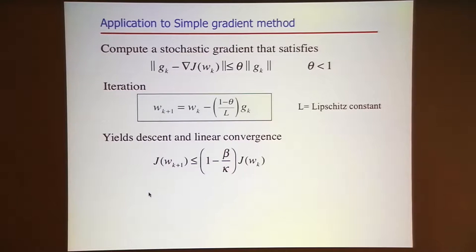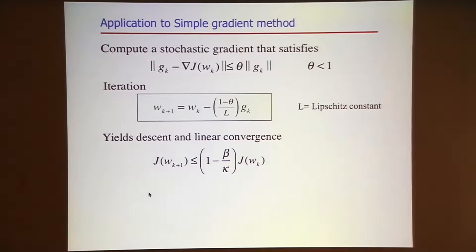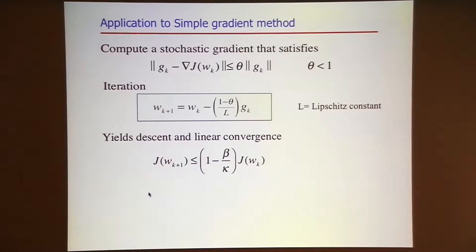Now let's put in an approximate gradient. The following result holds: by replacing the true gradient with a stochastic gradient that satisfies the theta condition for any theta less than 1, if you are able to satisfy this condition at every iteration, then at every iteration of the algorithm you can decrease the true objective by a linear fraction.